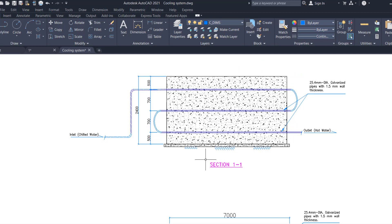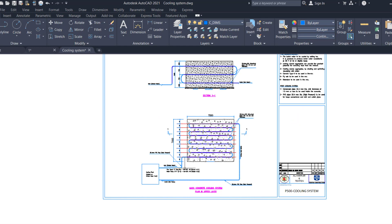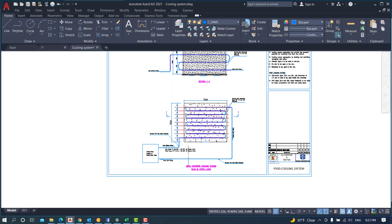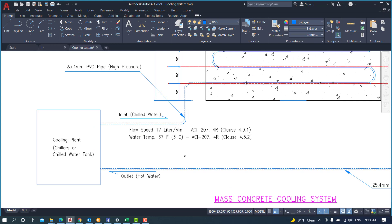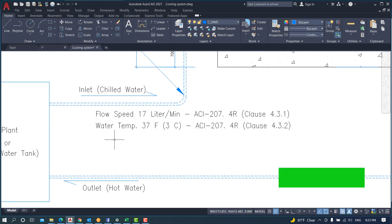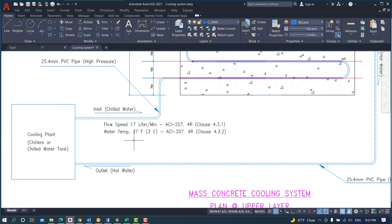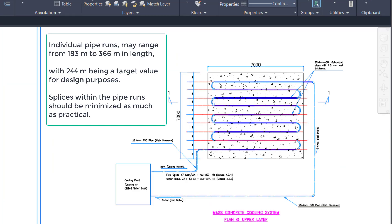Cold water circulation speed shall be in between 15 to 17 liters per minute in order to ensure optimum heat exchange between water and concrete. Inlet chilled water temperature as low as 37 Fahrenheit (3 centigrade) has been used for post-cooling. Individual pipe runs may range from 183 meters to 366 meters in length, with 244 meters being a target value for design purposes.